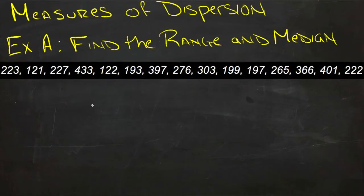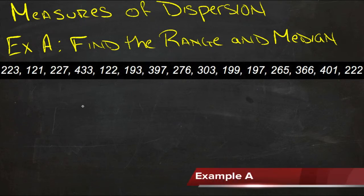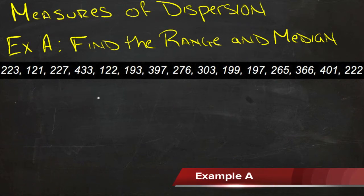Measures of dispersion can actually be similar to measures of central tendency. They're both used as ways to analyze data and see how different numbers compare to the overall average or most common number that's going to come up in a specific series.